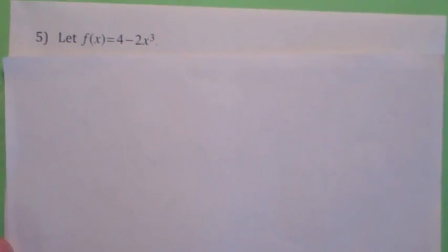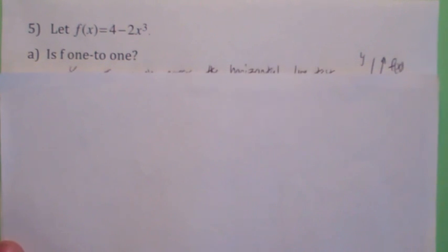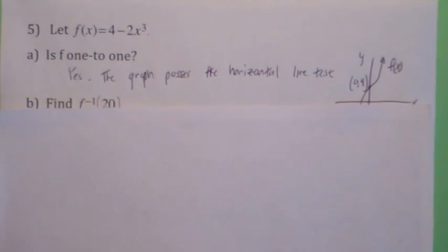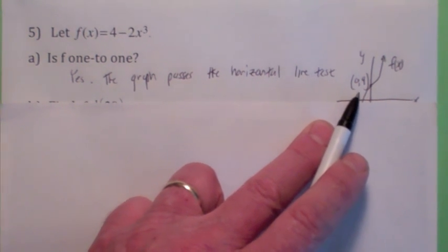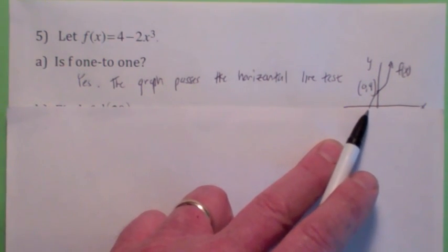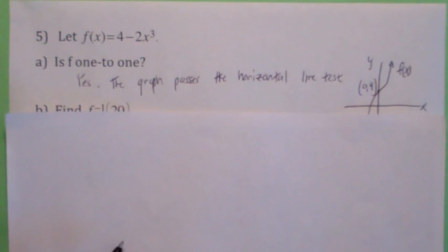Okay, let's do one more thing. Let's look at this function here. 4 minus 2x cubed. Is f 1 to 1? Well, I think if you graph the function, you should know how to graph it by hand, actually. It's just a translation of x cubed. It looks like it's 1 to 1. It passes the horizontal line test.